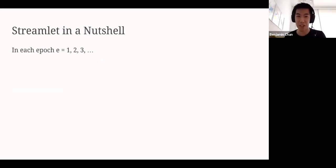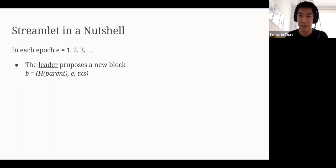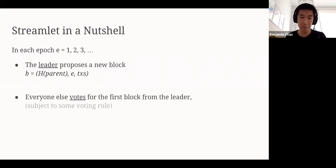Now let's describe Streamlet the protocol in a nutshell. At a high level, in every epoch E, starting in epoch one, and then two, and then three, and so on and so forth, the leader is going to propose a new block. The block is going to have the structure hash of a parent block, the epoch number, which is important, and some set of transactions. We'll describe how they choose this block soon. Now, everyone else is going to vote for the first block they see from the leader, subject to some voting rule. It's really simple. In every epoch, we propose a block, and people vote for it. Next epoch, propose a block, people vote for it.